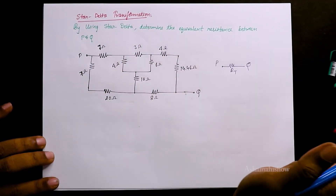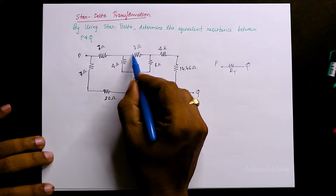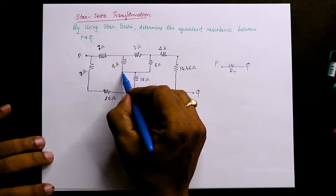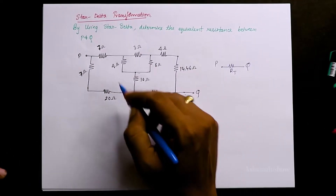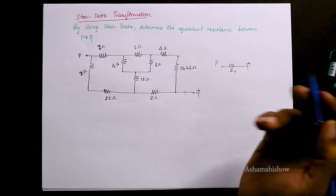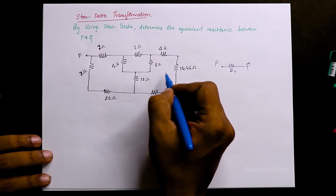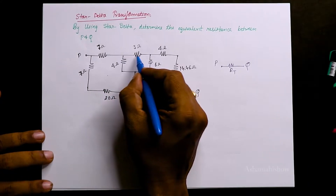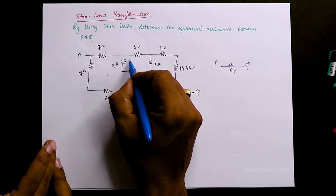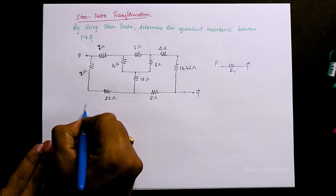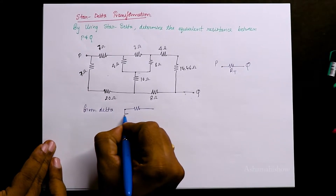If we have any star connections here — this has a node, but it is not a star because there is an element of 3 ohms in between. If we had only 4, 6, 10, then it would be a star, but we have a 3 in between so it is not. Do we have any stars? No. For delta — a closed loop — we have one, two, three closed loops. Let us start from the center; we have a delta there.